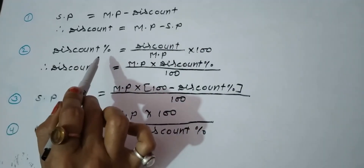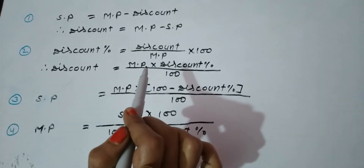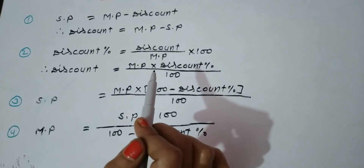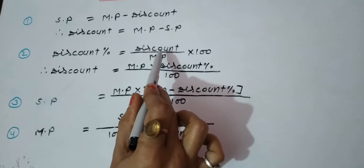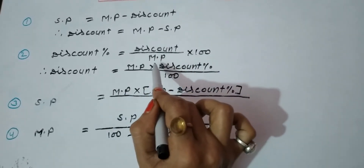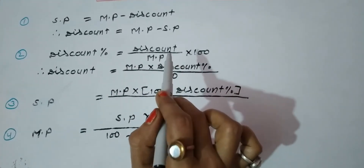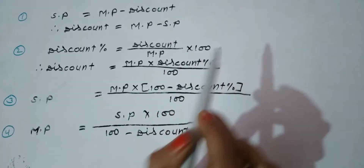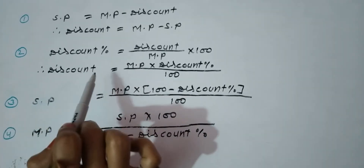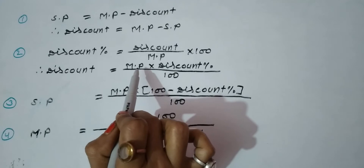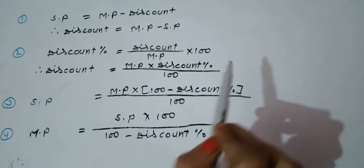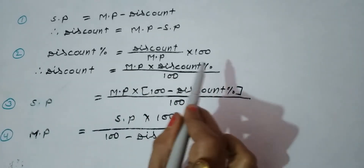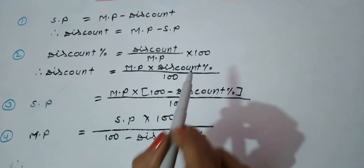The second formula is discount percent. Discount percent = (Discount ÷ MP) × 100. From this, you can understand: when we have discount and market price, we can find discount percentage. Also, we can rearrange to get: Discount = MP × (Discount% ÷ 100).